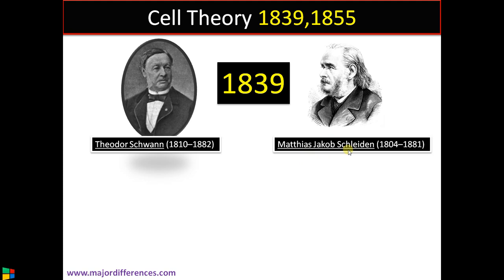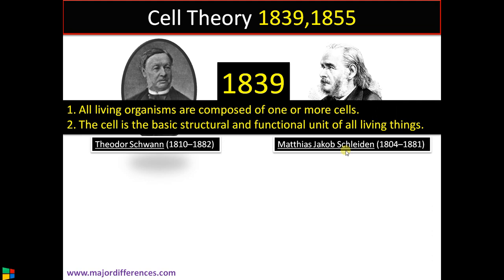Whereas Matthias Schleiden was a German botanist and he took plant specimens, sectioned them and observed under the microscope, and found out that plants are also made up of cells. Then they together came up with a theory called cell theory in 1839, stating that all living organisms, plants and animals, are composed of one or more cells. The second statement was the cell is the basic structural and functional unit of living things.